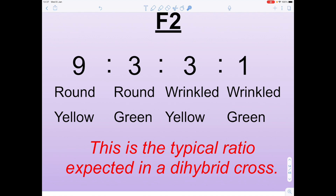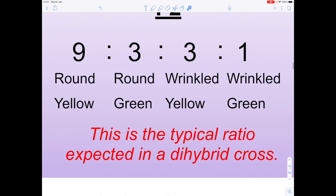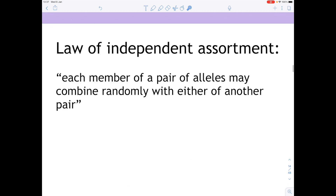We have our ratio, and notice this 9:3:3:1 is the typical ratio expected in a dihybrid cross. If you're ever doing a dihybrid cross with unlinked genes involving a heterozygous genotype, you will find a 9:3:3:1 ratio. This is due to the law of independent assortment, which states that each member of a pair of alleles may combine randomly with either of another pair.